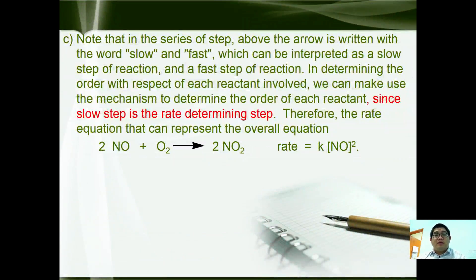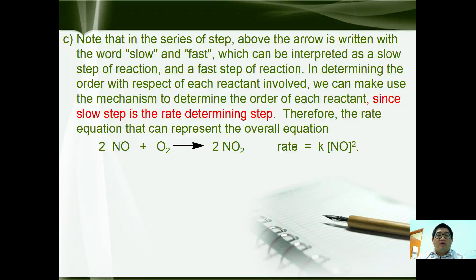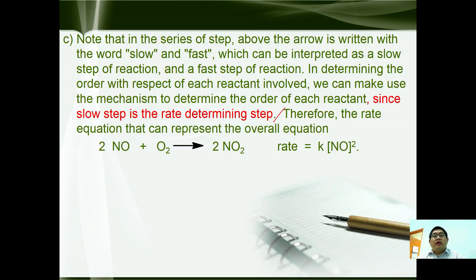Note that the steps above are labelled as slow and fast, indicating the slow step and the fast step of a reaction. In determining the order with respect to each reactant, we make use of the mechanism, since the slow step is the rate-determining step. Therefore, the rate equation that represents the overall reaction is: rate = k[NO]².